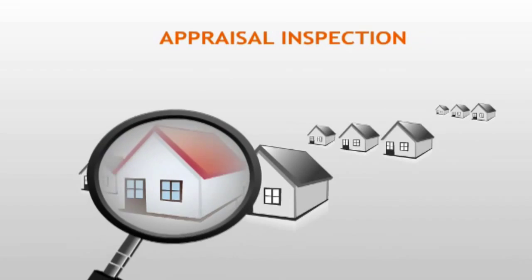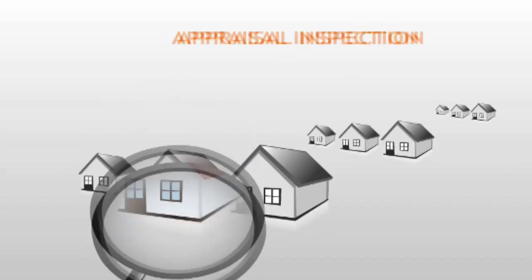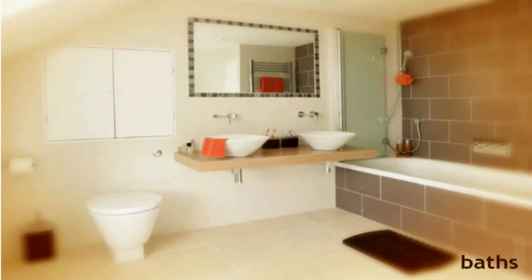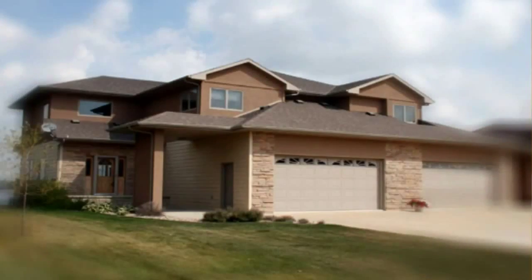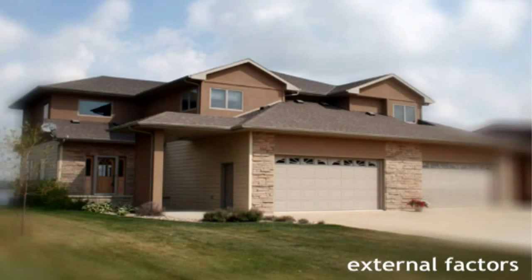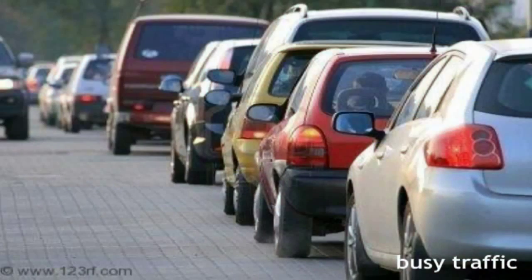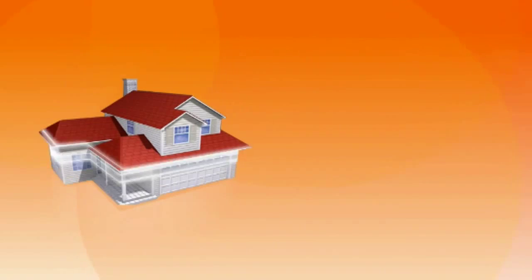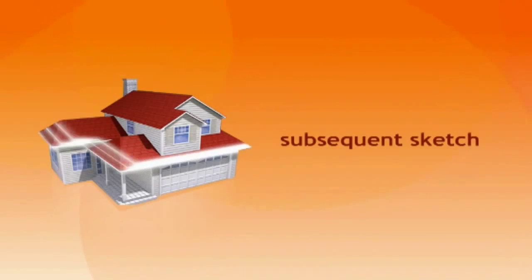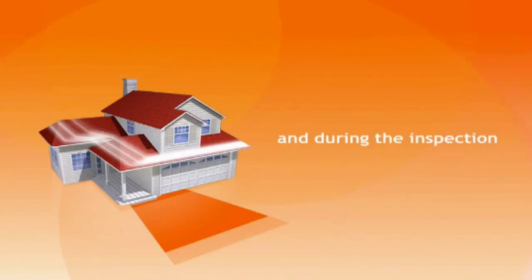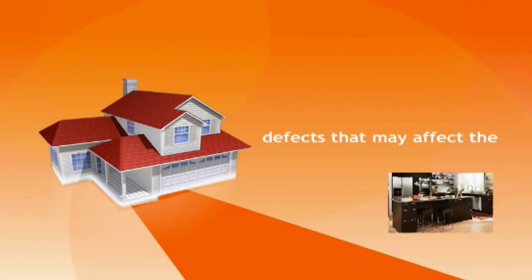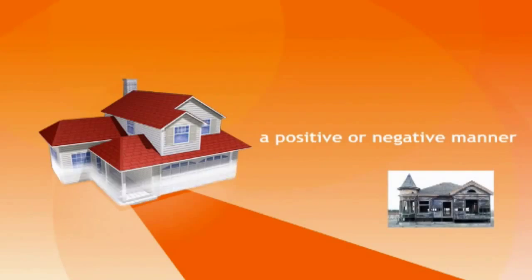The appraisal typically starts with an inspection of the property in order to verify its condition, total living area, and total bedrooms and baths, as well as determine if any adverse external factors are present, such as close or immediate proximity to freeways, busy traffic arteries, high voltage power lines, and others that may have an adverse effect on the value of the property. The inspection usually includes a measurement and subsequent sketch of the property, and during the inspection, the appraiser also notes any additional features or defects that may affect the property's value in either a positive or negative manner.